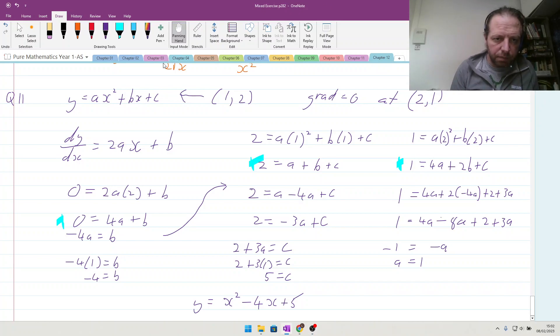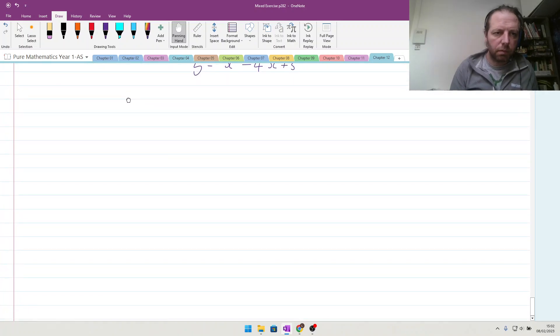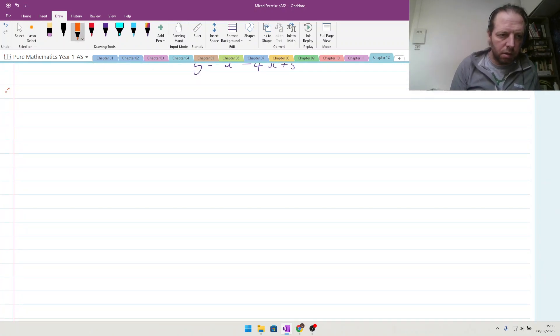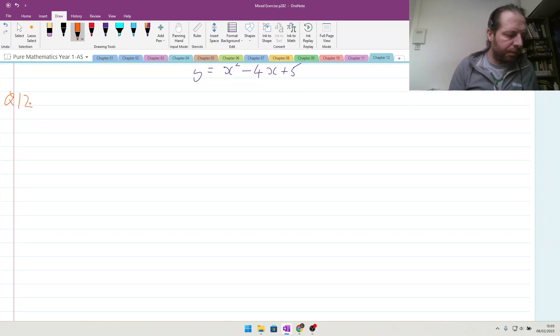Okay then, question 12 now. So a curve c has an equation of y equals x cubed minus 5x squared plus 5x plus 2. Find dy by dx. So dy by dx is going to be 3x squared minus 10x plus 5. Part a, done.